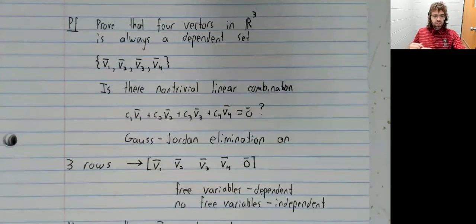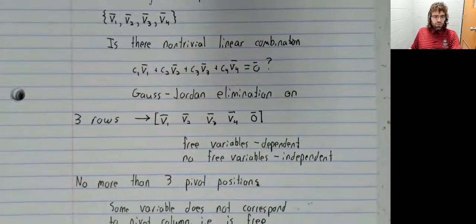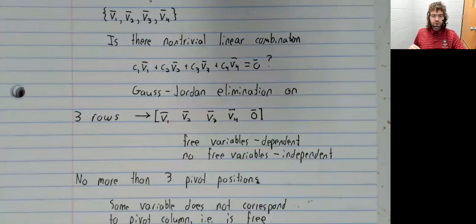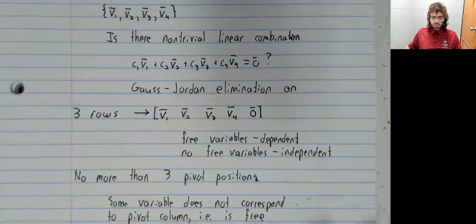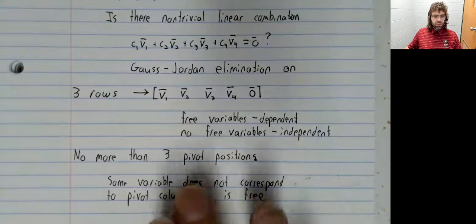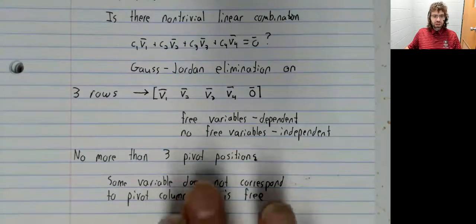That is to say, when we set up the augmented matrix, the number of rows will be less than the number of variables, and we'll be able to use this argument.